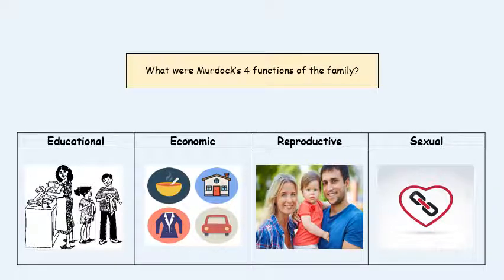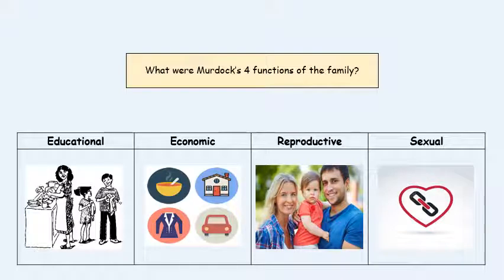The reproductive function of the family is very simple: it's making new human beings, new members of society. At the time of writing, Murdoch was in a world where IVF wasn't a thing, or at least wasn't in production at the time. Therefore, the easiest way of a family reproducing was to be within a nuclear family setup.